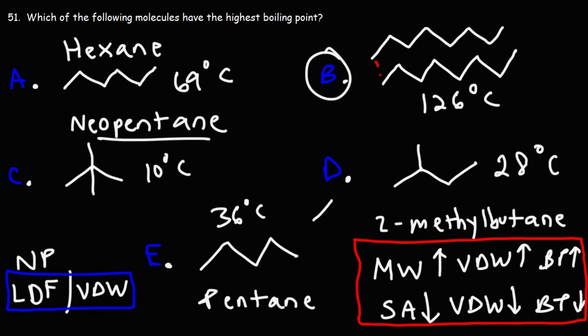As the area of contact increases, the van der Waals interactions between these two molecules, that's going to increase. So you're going to have more van der Waals forces holding these two molecules together as the area of contact goes up. As a result, the boiling point is going to be higher.